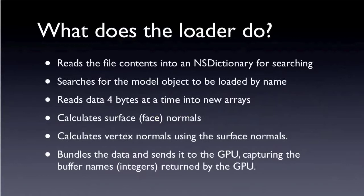What does the loader do? It reads the file contents into an NSDictionary for searching. It searches for the model object to be loaded by name, reads data four bytes at a time into new arrays, and from those arrays it calculates the surface normals, and using the surface normals it calculates the vertex normals. These calculation steps for the normals have to be done because Cheetah 3D's file does not contain any normal data. Apparently, Cheetah 3D itself does this kind of calculation when it reads one of its files. Finally, the loader bundles all that information into a structure and sends it over to the GPU, capturing the buffer names as integers returned by the GPU.